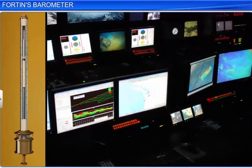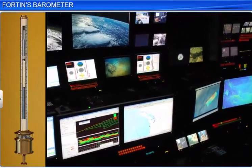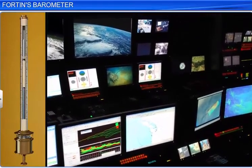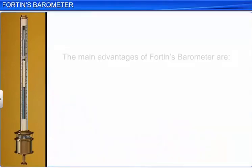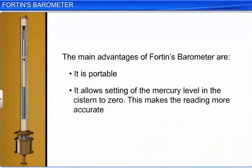Fortin's barometer is widely used in laboratories and in meteorological departments. Its main advantages are that it is portable, it allows the mercury level in the cistern to be set to zero, and this makes the reading more accurate.